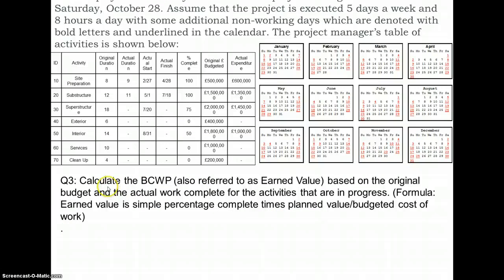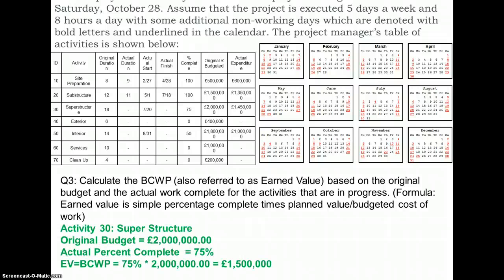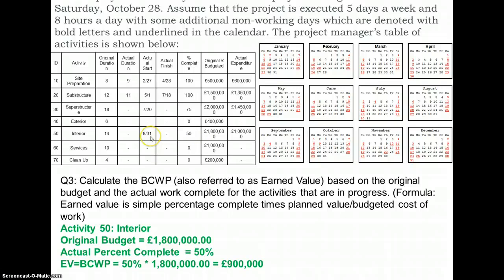The third problem is to calculate the budgeted cost of work performed, also referred to as the earned value, based on the original budget and the actual work complete for the activities in progress. For calculating earned value we use the formula: percentage complete × planned value (budgeted cost of work). The superstructure activity has an original budget of £2 million and 75% is complete, so the earned value is 75% of £2 million = £1.5 million. The second activity, interior works, has a total budget of £1.8 million and 50% is complete, giving an earned value of £0.9 million.